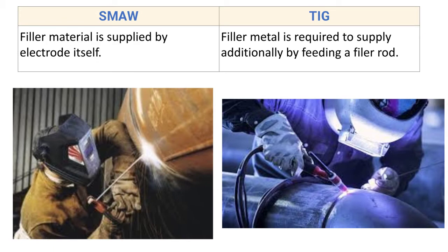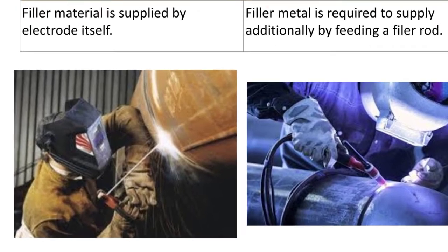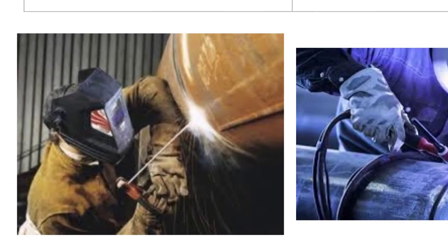Next difference: for SMAW, filler material is supplied by the electrode itself. As the shielded metal arc welding process uses a consumable electrode, the filler material is supplied directly by the electrode.